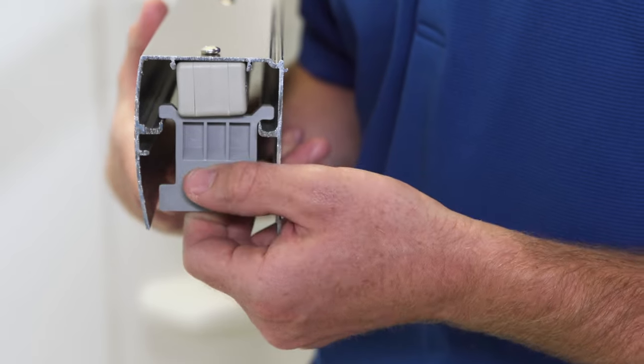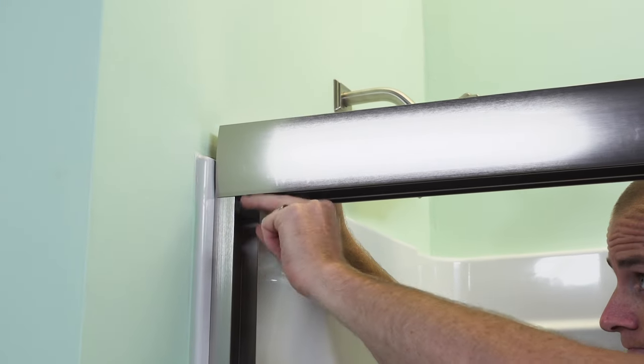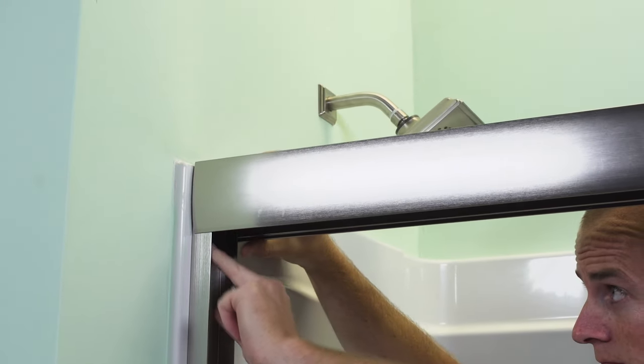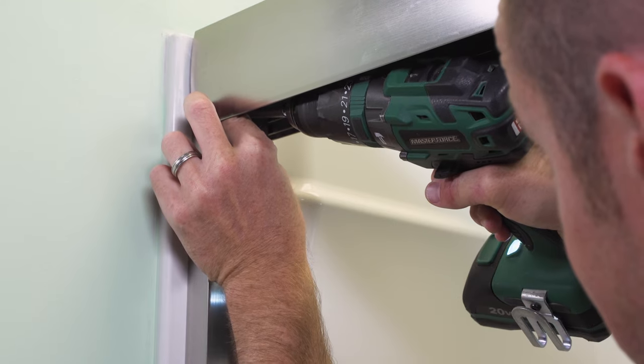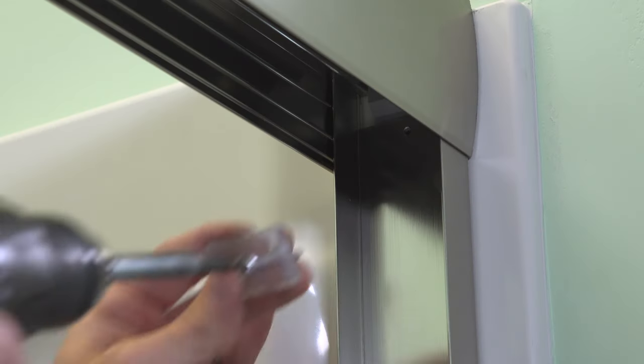Insert the header locks into each end of the header and set the header on top of the wall jams. Make sure the holes are aligned. Now fasten the header to the wall jams with the provided bumpers and screws.